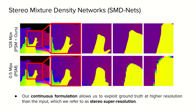Despite the input image being at fixed resolution, we can predict much higher resolution outputs. Here we show an example of this important property, where on the bottom we see a disparity map computed by a standard deep stereo matching network with a maximum output resolution of 0.5 megapixels, while on the top we show the estimated disparity using a combination of the bimodal mixture model and the proposed SMD head that allows querying at arbitrary spatial precision — in this case 128 megapixels.